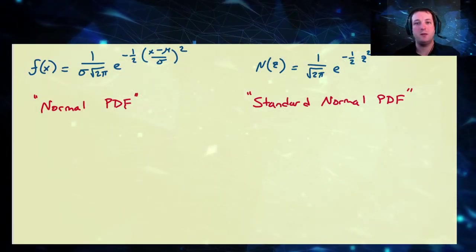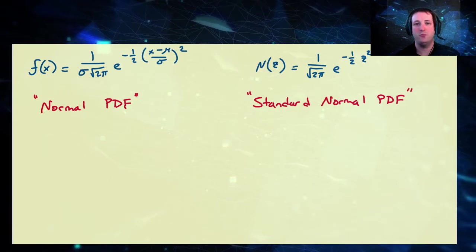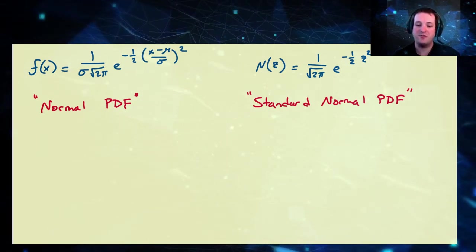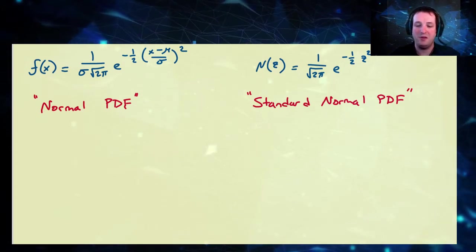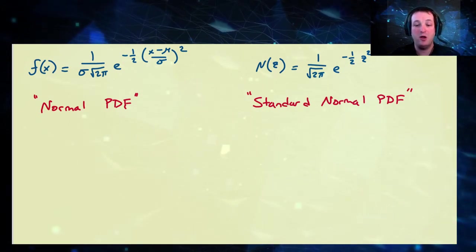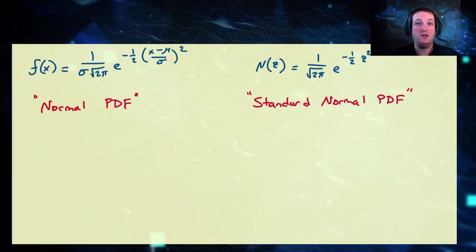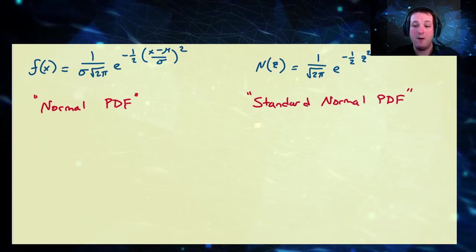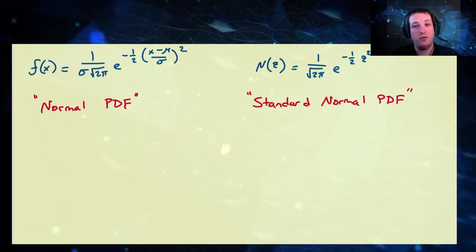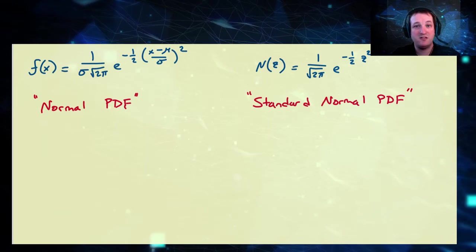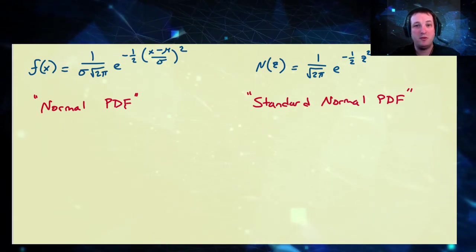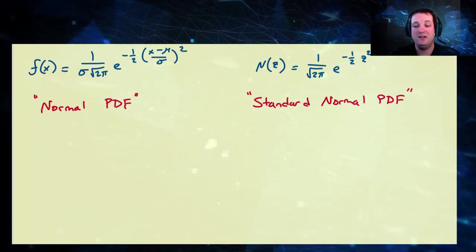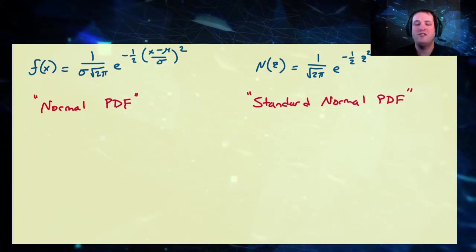Let's begin by reviewing some of the basic concepts of normal and standard normal distributions that you definitely should understand before we get into this discussion. The normal probability density function for a random variable x is given by: 1 over sigma times the square root of 2 pi, times e to the power of negative one-half times (x minus mu over sigma) squared. Then we have the more friendly version — the standard normal distribution — which is 1 over the square root of 2 pi times e to the negative one-half z squared.